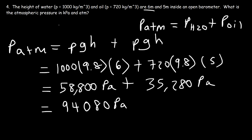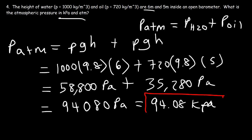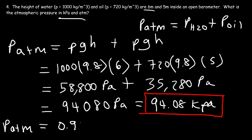We need the answer in kPa and atm. Dividing 94,080 by 1,000 gives 94.080 kilopascals. To convert to atm, divide by 101.3, giving an atmospheric pressure of 0.9287 atm.